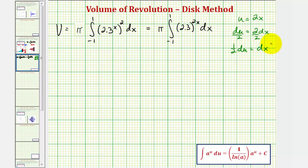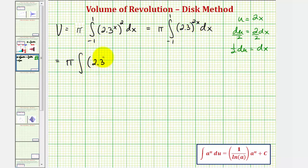For the next step, let's write this in terms of u, leaving out the limits of integration temporarily. So we'll have pi times the integral of 2.3 raised to the power of u, but since dx equals one-half du, we have an extra factor of one-half, so let's write this as pi divided by 2 times the integral of 2.3 to the u, du.